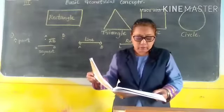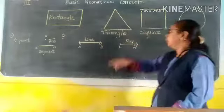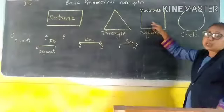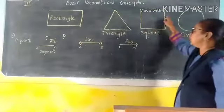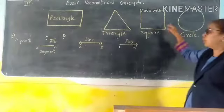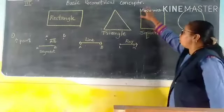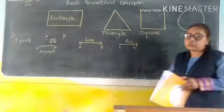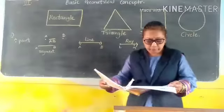Third one is a square. Can you see the square? How many sides are there? One, two, three, four sides and four vertices. And all the sides are equal. What will you say? All the sides are equal.